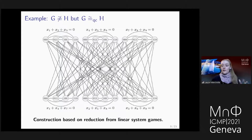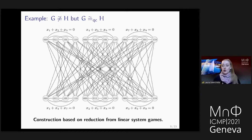One thing this reduction gives us is families of examples of non-isomorphic graphs that are quantum isomorphic. Another thing it tells us is that this relation of quantum isomorphism is undecidable. So even if your graphs are finite, this relation is undecidable: there's no algorithm that would allow you to test whether or not two graphs are quantum isomorphic.